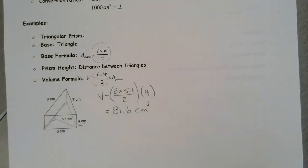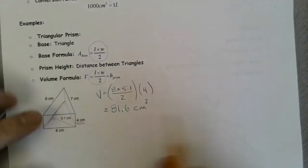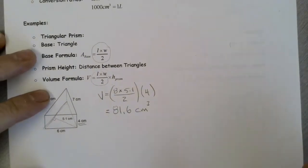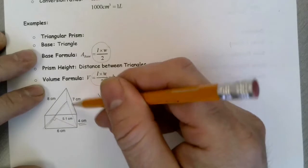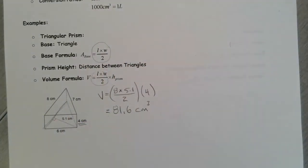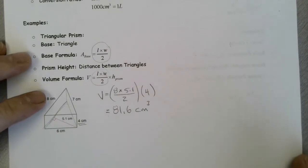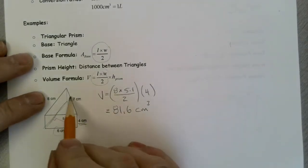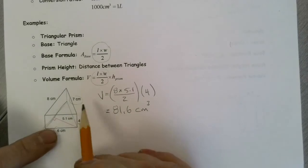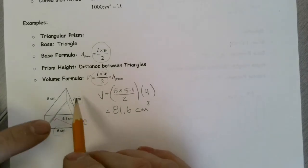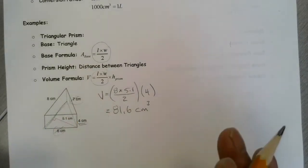There are a couple of other numbers that were given to us — the sides of the prism. Those are important measures, but not for finding the volume. You might have used them, for example, to find the altitude of the triangular base. But here it's a matter of recognizing which numbers are unimportant for what we're trying to do.